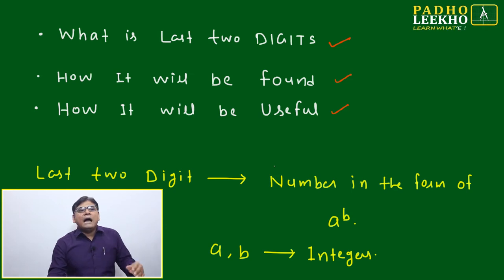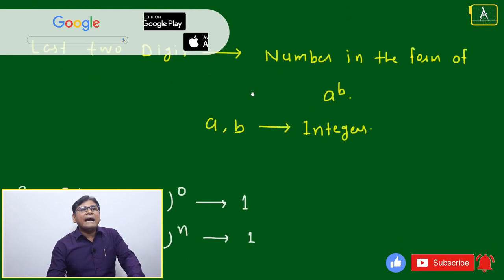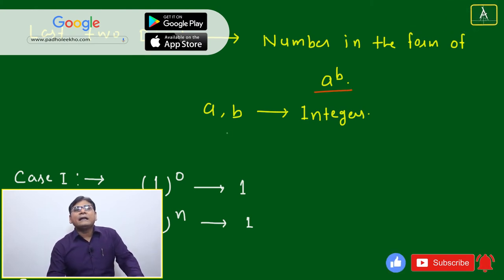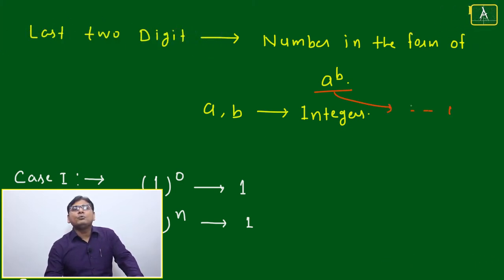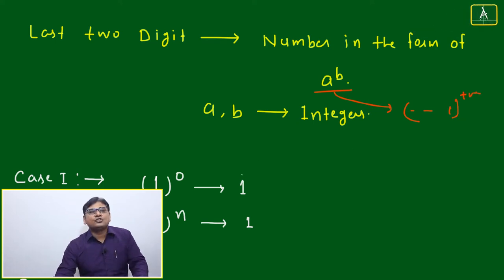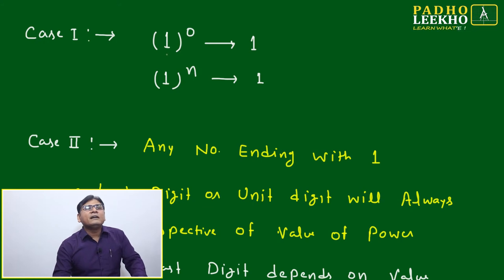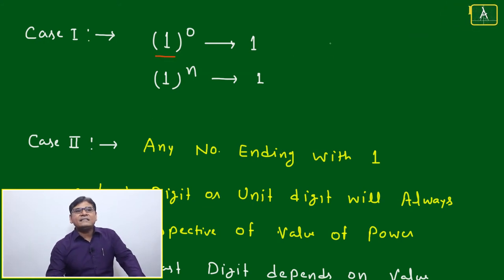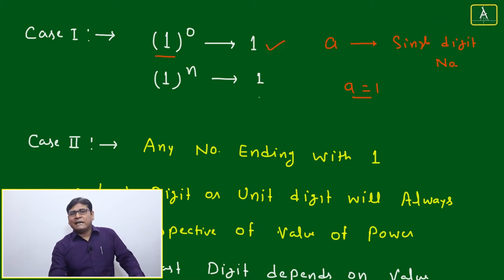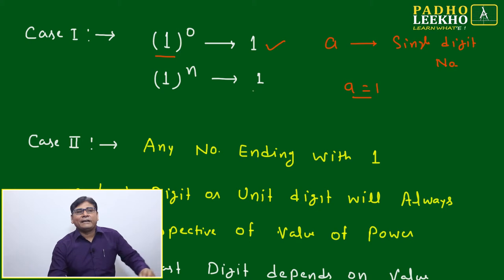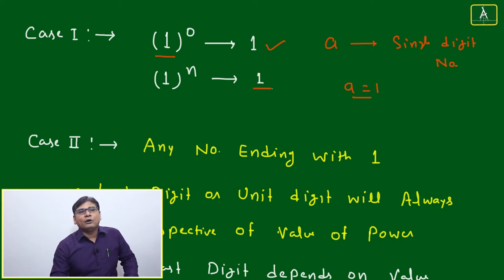All other digit endings will be discussed in separate Master Stroke sessions. In this session, for a number in the form A^B where A and B are integers, if A ends with one and B is a positive integer, we find the last two digits. Case one: if A is a single digit number ending with one, then A can only be 1. One to the power zero is 1, and one to the power n is always 1.